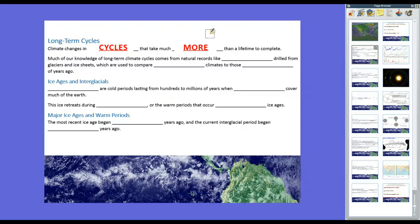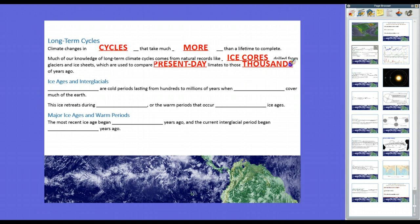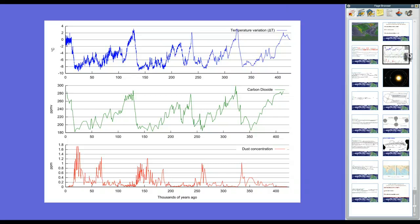Some of the data that scientists use to argue back and forth about this come from natural records like what we find in the ice cores, drilled from glaciers and ice sheets. Because what happens is it freezes the dust and particles and gases and stuff at the time the ice was laid. So just like tree trunks and tree rings can tell us about the life of a tree, these ice cores can do also. Because what we do is we compare present day climates to those back then, thousands or even millions of years ago.